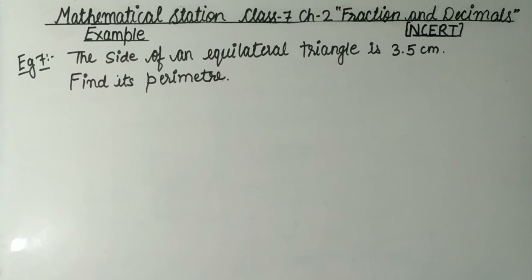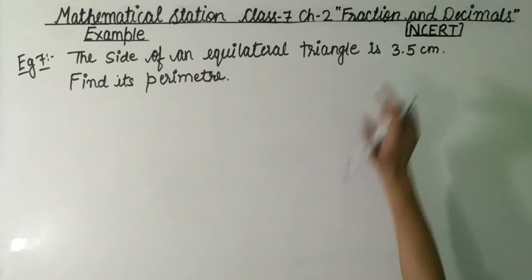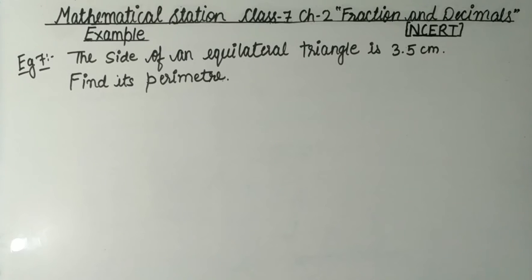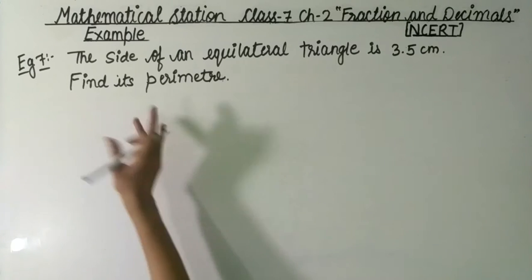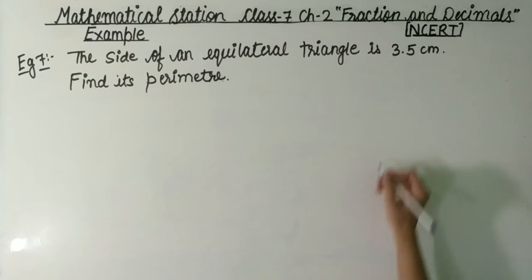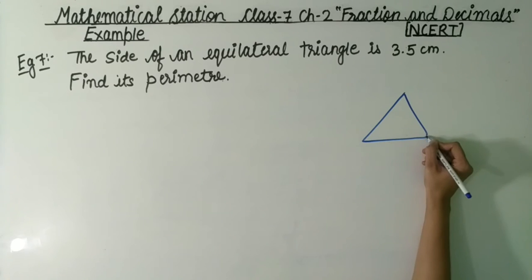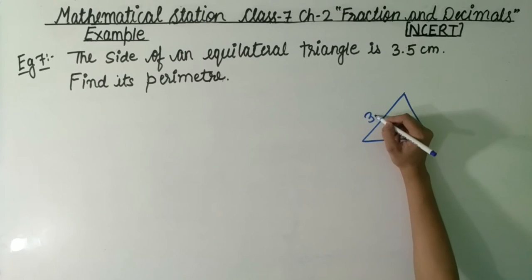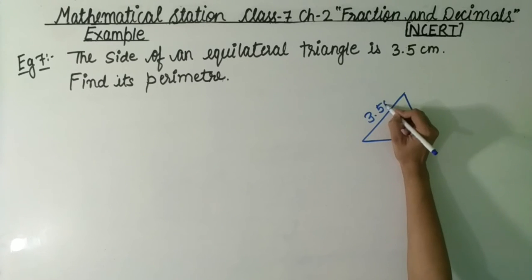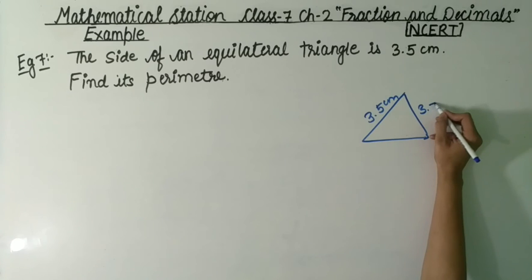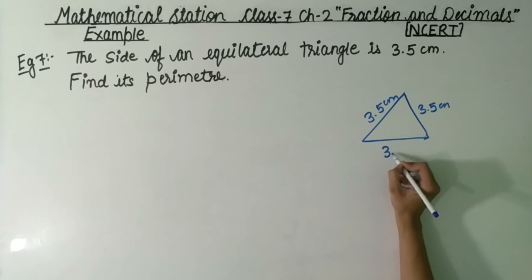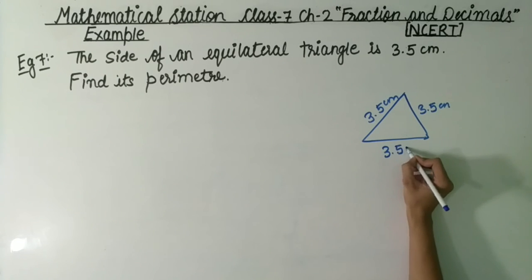The side of an equilateral triangle is 3.5 cm. Find its perimeter. In an equilateral triangle, all three sides are equal — each side is 3.5 cm, this side is also 3.5 cm, and this side is also 3.5 cm.